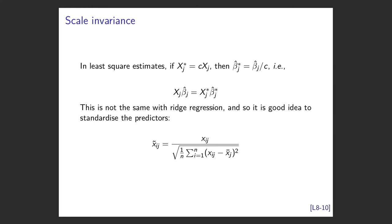The problem is as soon as you standardize everything, interpretation of coefficients gets harder — because now you're talking about change in income on a standardized scale. There's always that balance between doing things statistically correctly and keeping it interpretable within context. PCA is a classic example — everyone loves PCA until they ask for interpretation. We'll get to PCA later in this course.